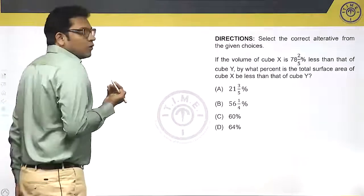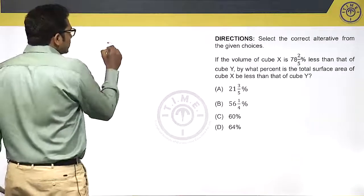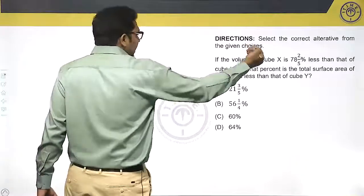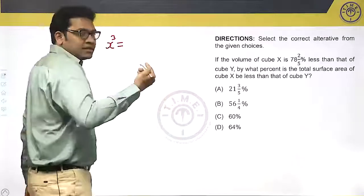Volume of cube X: let the side of cube X be x, so the volume of the cube is x³. This is 78 2/5 percent less than that of cube Y.